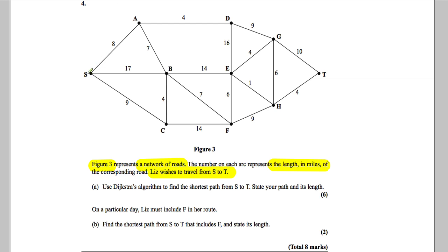She wishes to travel from S to T. It says use Dijkstra's algorithm to find the shortest path from S to T, state your path and its length.